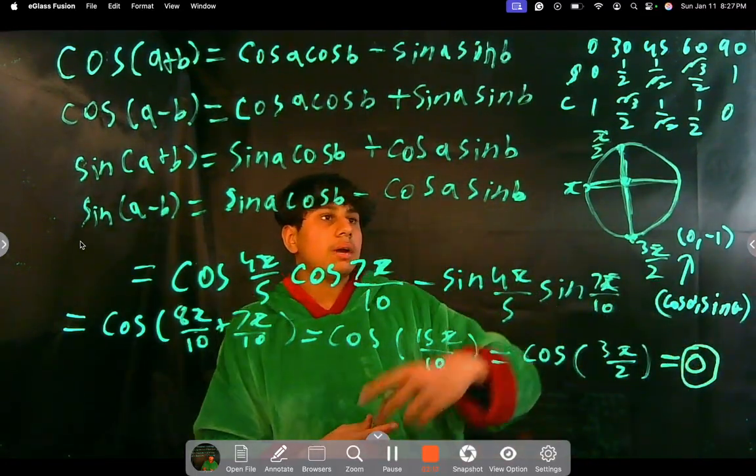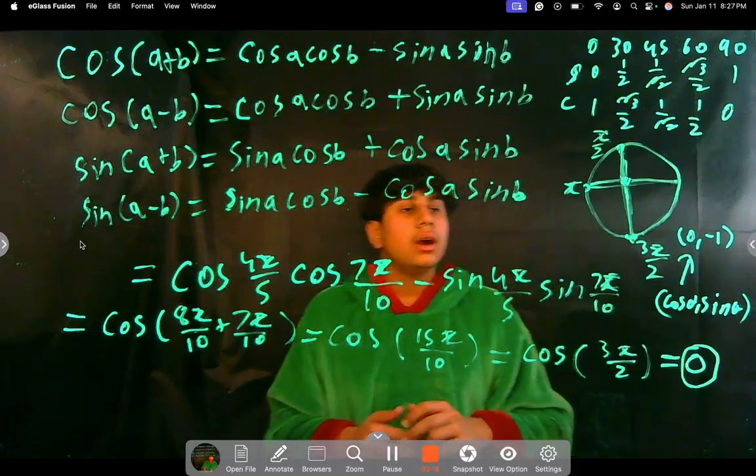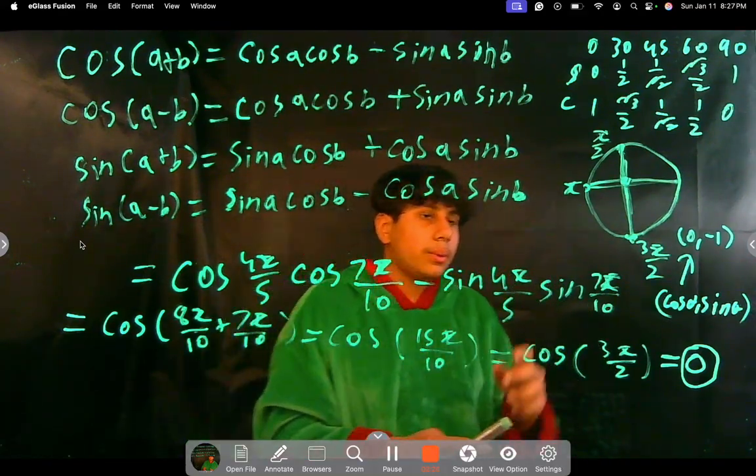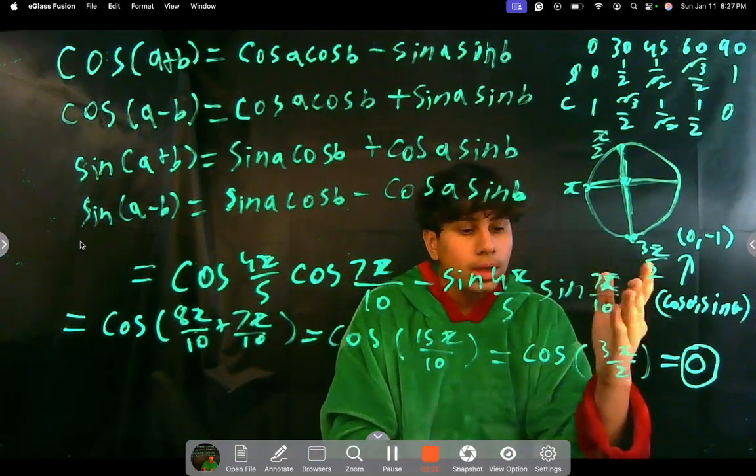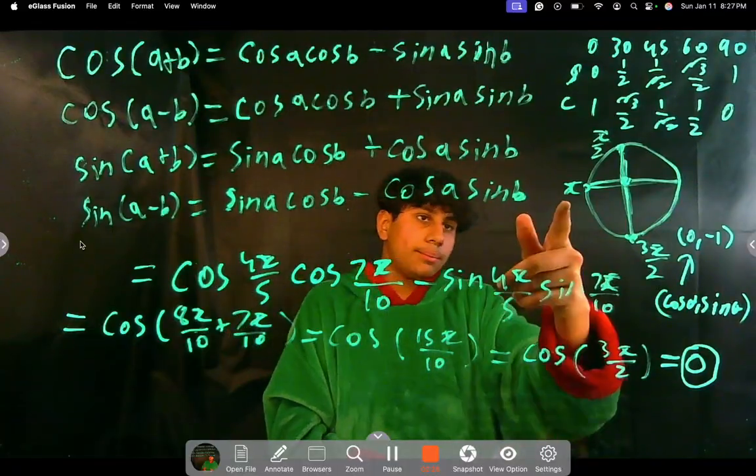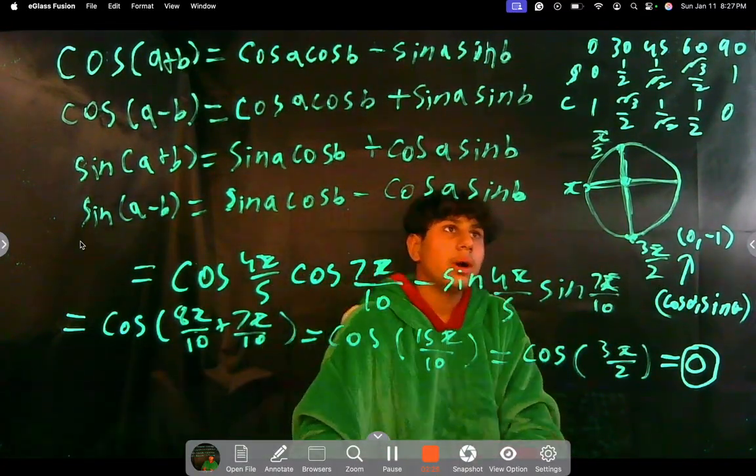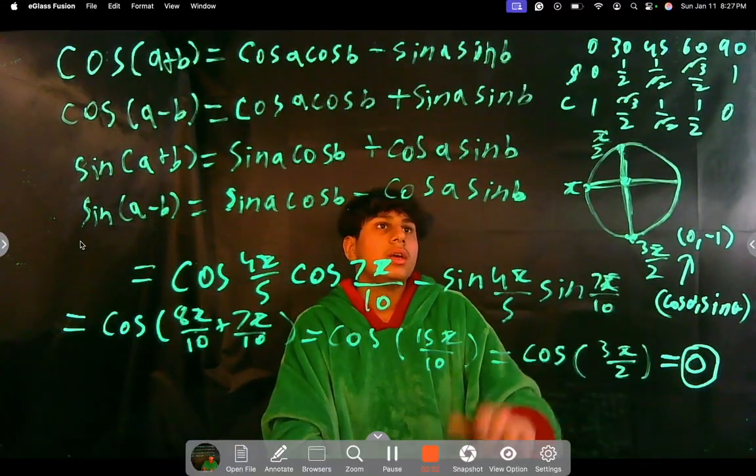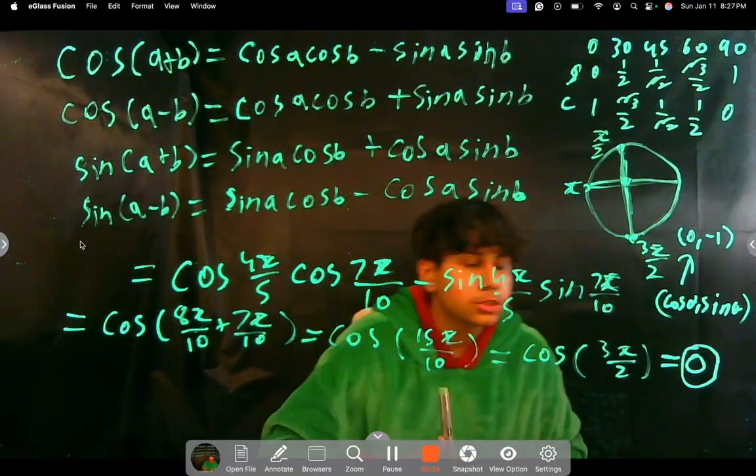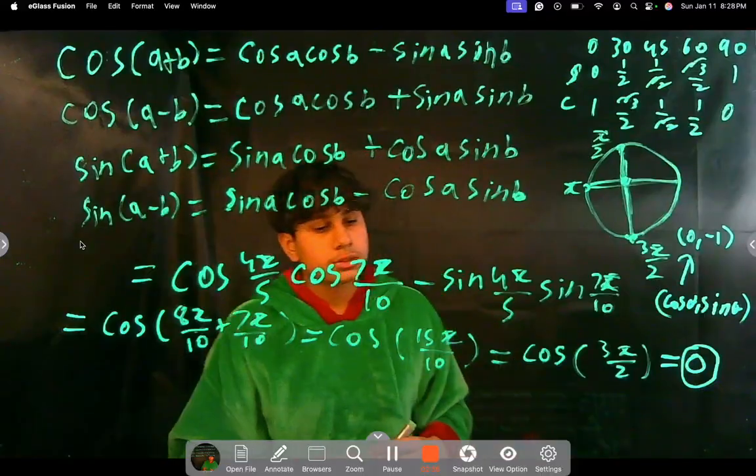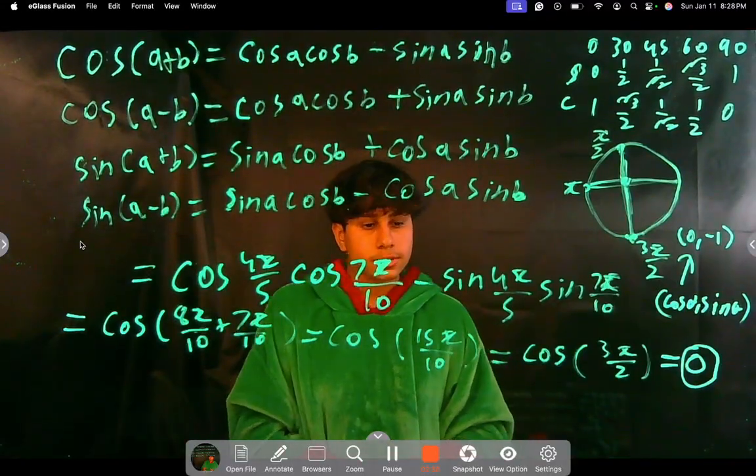And even if we use what we have up here, we can use reference angles. If you do 3π/2 minus π, that's what you do when you're in the third quadrant, well then you get π/2. And if you look here, cosine of π/2, which is 90 degrees, is 0. So that's how you get 0. And yeah, that's really it for this video.